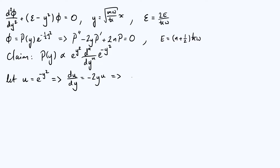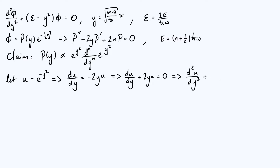Since we're aiming to prove that our proposed p of y satisfies the differential equation with zero on the right, let's put all terms on the same side: du by dy plus 2y u equals zero. Now we're aiming to show that our function satisfies a second order differential equation, so let's differentiate a second time. The first term gives d²u by dy². Then using the product rule on 2yu: differentiating y and leaving u gives 2u; differentiating u and leaving y gives plus 2y times du by dy; and that's all equal to zero. So now we have a second order differential equation obeyed by e to the minus y squared.